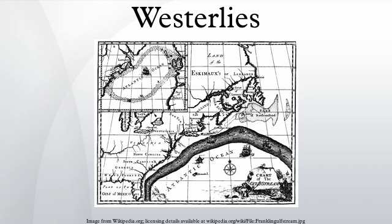The westerlies are particularly strong, especially in the southern hemisphere, where there is less land in the middle southern latitudes to cause the flow pattern to amplify, or become more north-south oriented, which would slow the westerlies. The strongest westerly winds in the middle latitudes can come in the roaring 40s, between 40 and 50 degrees latitude.